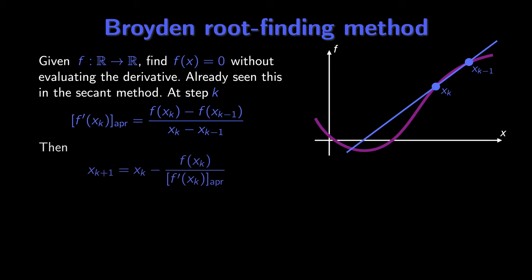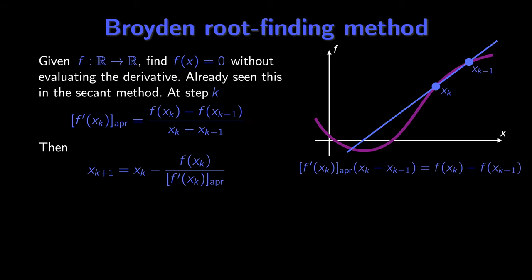Once we have this, we can evaluate our next step x_{k+1} using a Newton step, but instead of using the exact derivative we'll make use of our approximation. If we think about generalizing this to more than one dimension, it's first worth multiplying through our expression for approximate derivative by x_k minus x_{k-1}.